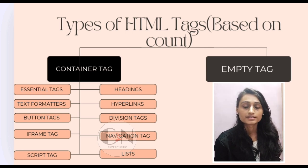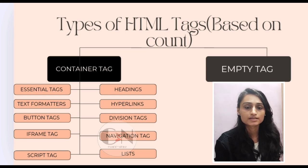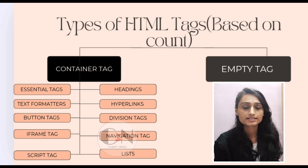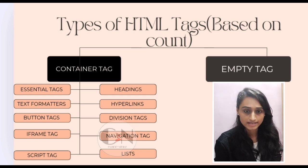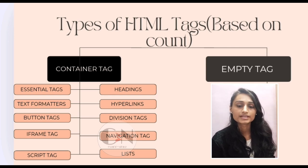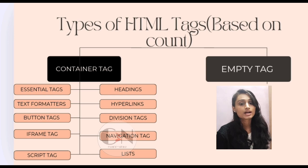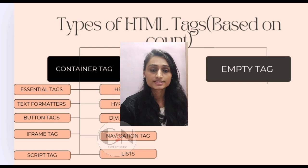The third essential container tag is the text formatter. Text formatters are used to format text: if we need to include a paragraph we use the opening and closing p tag; if we need to bold part of the text we use the b tag; if we want to make the font italic we use the opening and closing i tag. The fourth essential container tag is the hyperlink tag, which is used to link another web page to the present web page. We will discuss these container tags in more detail later on this channel.